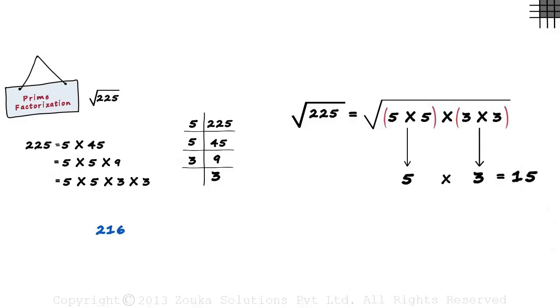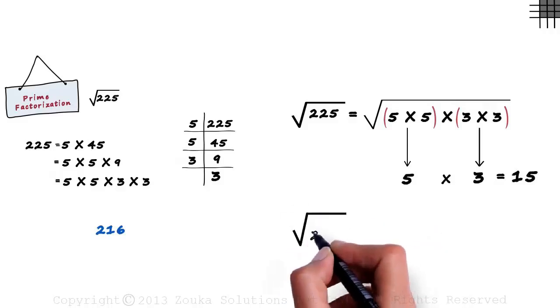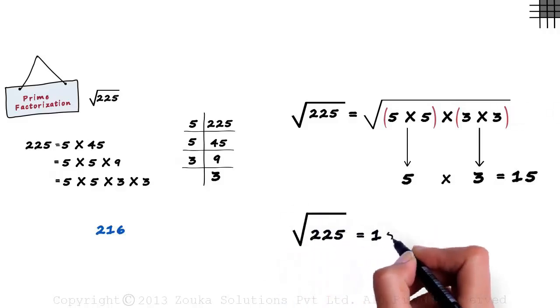At first, this seems long. But with practice, it gets very simple. Hence, we can say that the square root of 225 is 15.